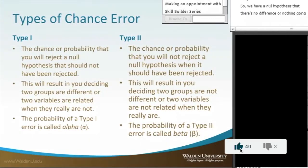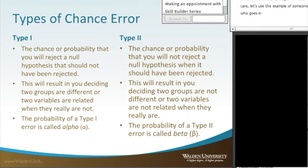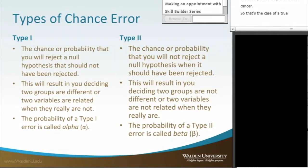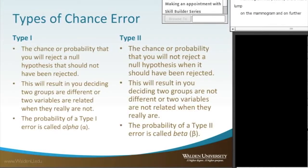Let's use an example in healthcare — someone who goes in for a mammogram. You have two correct options. The mammogram can be negative, meaning there's no breast cancer, and upon further evaluation there truly is no breast cancer — that's a true negative. Or the mammogram was positive, there was a lump, and on further investigation there was breast cancer — that's a true positive.